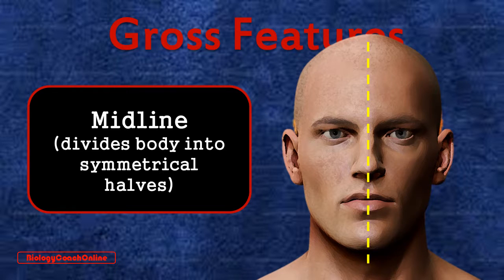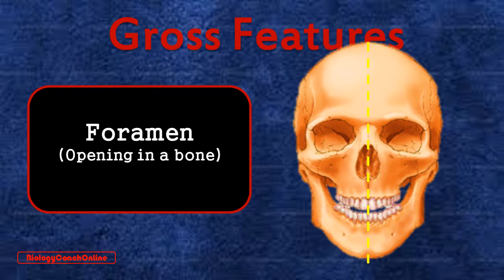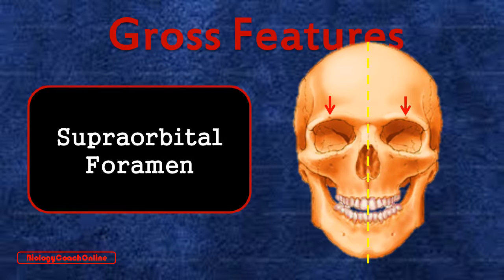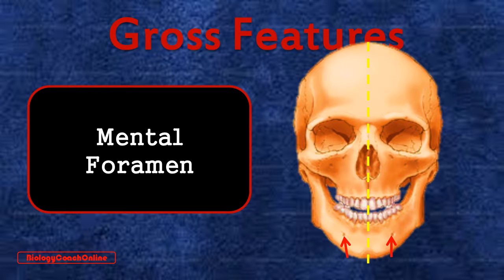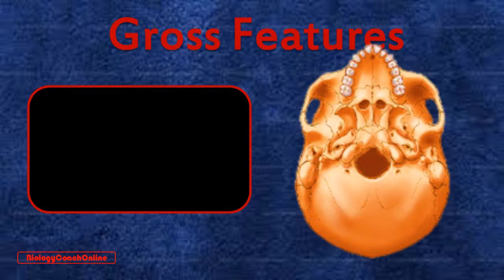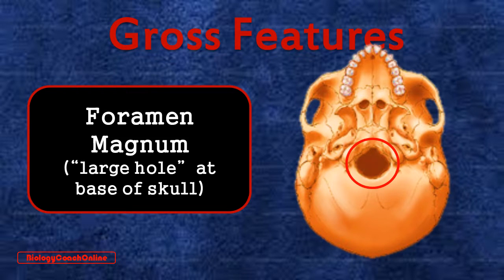That symmetry extends down to the skull as well. Continuing with our look at the gross features of the skull, we have a foramen — an opening in a bone. In the skull, nerves, arteries, veins, and other structures pass through foramina. Good examples are the supraorbital foramina — above the orbit of the eye — the infraorbital foramina — below the orbit of the eye — and the mental foramina on the chin. Now if we flip the skull over, we can see the king of all foramina: the foramen magnum, located on the floor of the skull.